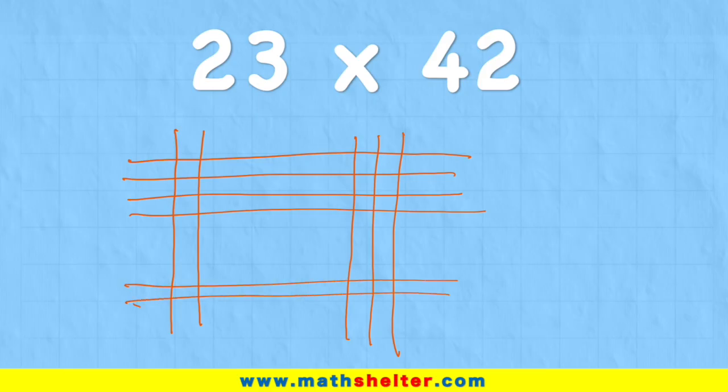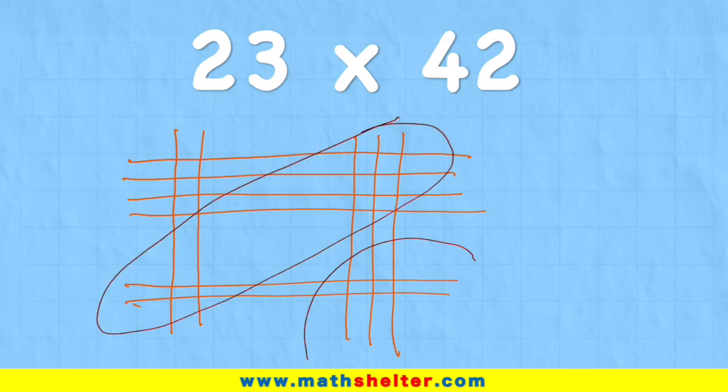Then all I have to do is group these into my 1s, my 10s, and my 100s. I'm going to put my labels — 1s, 10s, and 100s — over here. Then all I need to do is count the intersections.